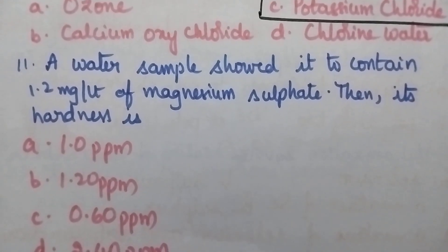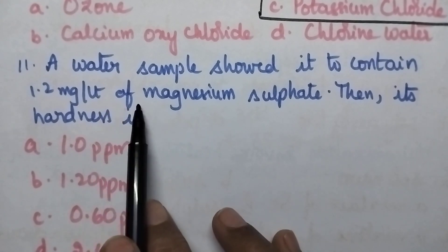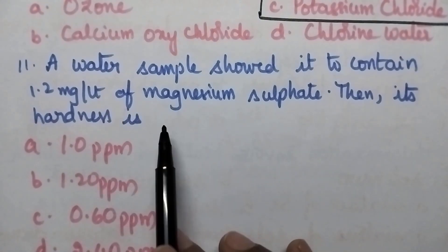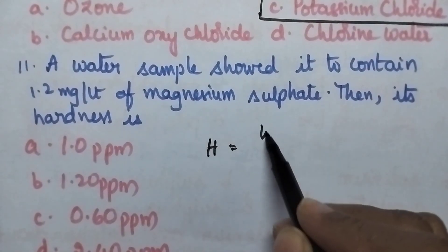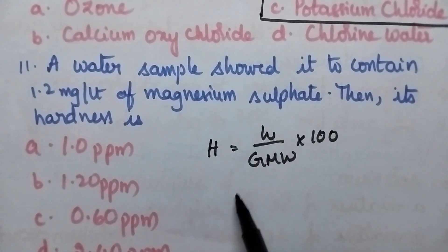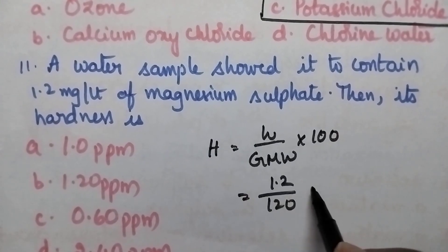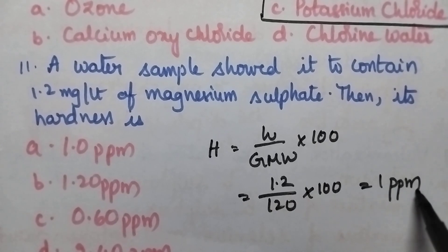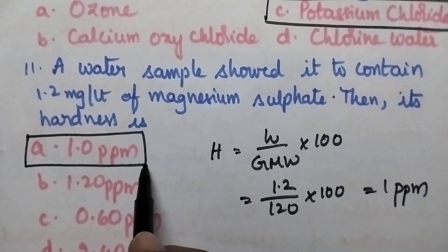A water sample showed it to contain 1.2 mg per liter of magnesium sulfate. Hardness = (weight / gram molecular weight) × 100 = (1.2 / 120) × 100 = 1 ppm. Option A is the right answer.